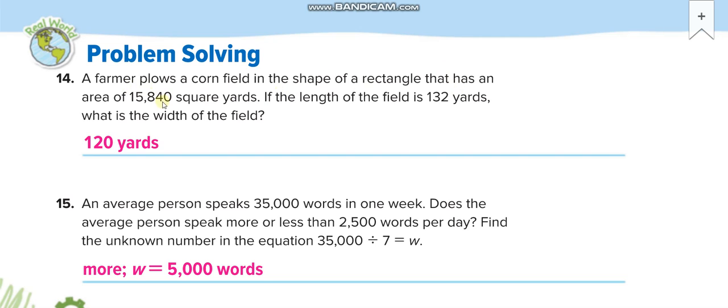An average person speaks 35,000 words in one week. Does the average person speak more or less than 2,500 words per day? How many days we have each week? Seven days. So you divide 35,000 by 7 and you get 5,000 words. So it means more than 2,500.